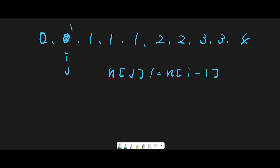But what if index zero has zero and index one already has one — they're different. If we used the number at the replaced place (index i) for comparison, when j finds a new unique number like two, we'd update index one with two, losing the one. We'd end up with 0 2 3 4, which is the wrong answer. That's why we always compare against i minus one.